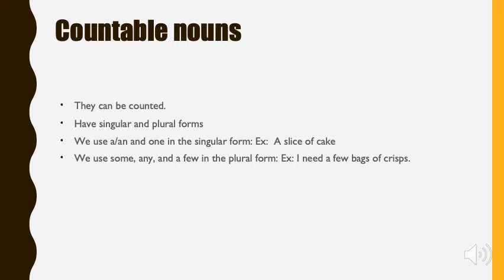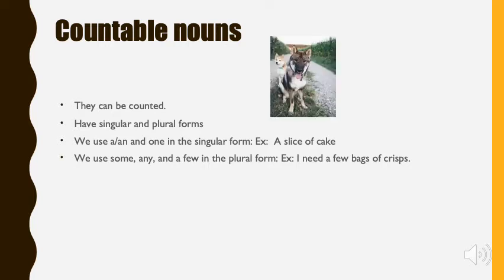So basically, countable nouns are all the things that we can count. For example, dogs. I can say a dog or one dog, singular form, and two dogs, plural form.